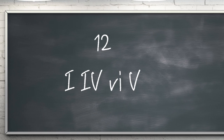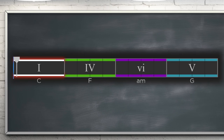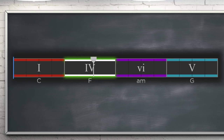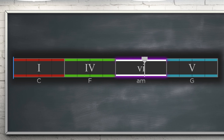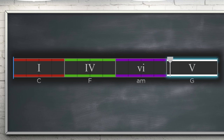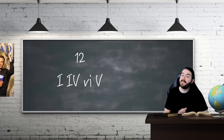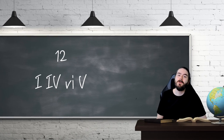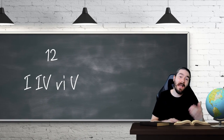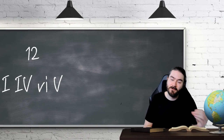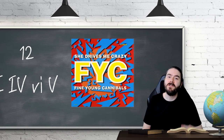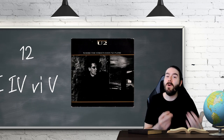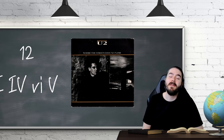In at 12, it's 1-4-6-5 — yet another spin on the first example, showing you how much mileage you can get out of simple progressions. Examples include She Drives Me Crazy by Fine Young Cannibals and Where The Streets Have No Name by U2.